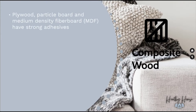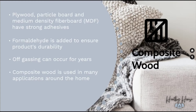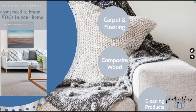Next is composite wood — plywood, particle board, and medium density fiberboard (MDF). These products often have strong adhesives and glue. Formaldehyde is used to ensure the product's durability, and it's one of the more well-known VOCs that can off-gas for years after manufacturing. Composite wood is used in so many applications in our homes — from building materials to furniture — so we're being constantly exposed. I share a link in this week's blog post to alternatives that don't use strong solvent adhesives containing VOCs.